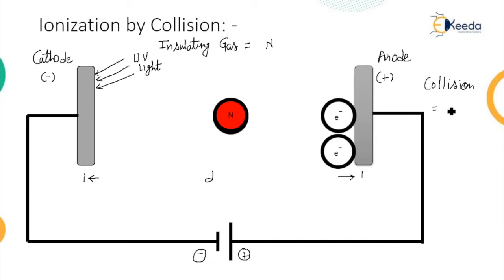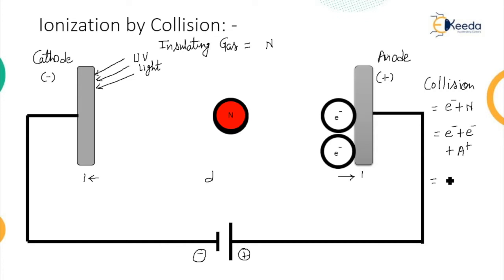So one electron collision with the neutral molecule releases one more electron, along with a positive ion. This particular process is called the collision process, which releases two electrons during one collision. The formation of electrons and positive ions in between the gap of the electrodes is called ionization, and since it is due to the collision process, it is called ionization by collision.